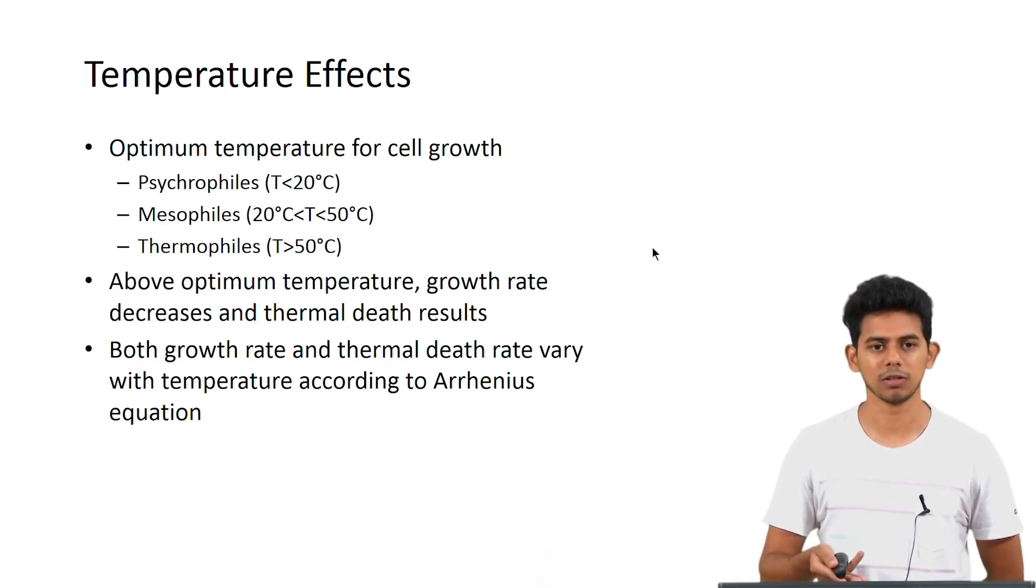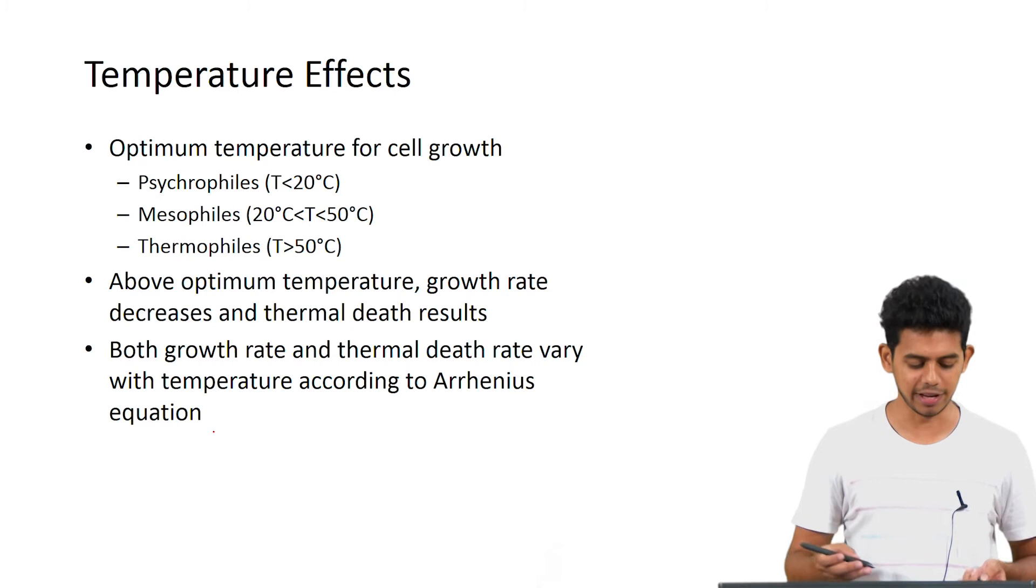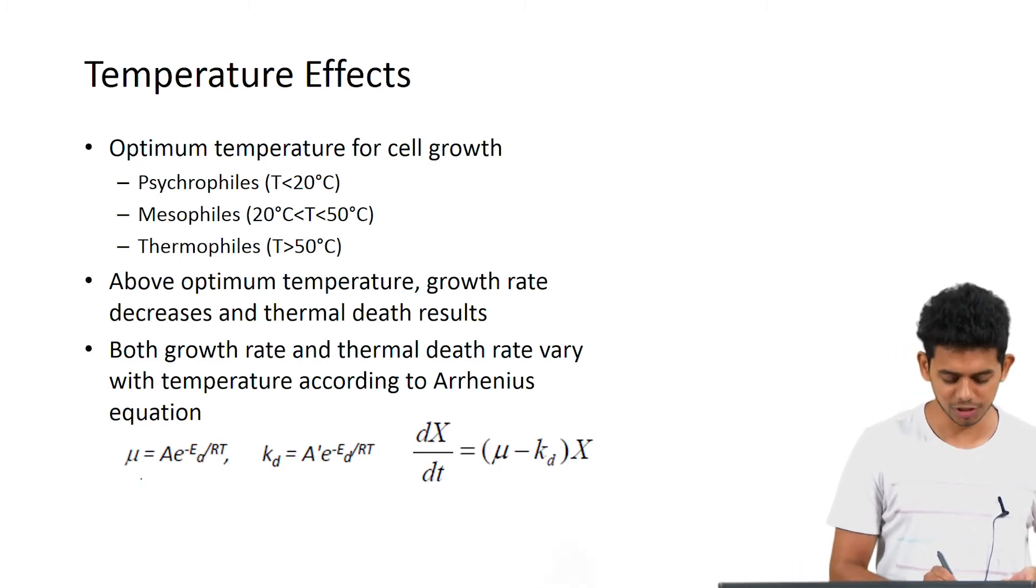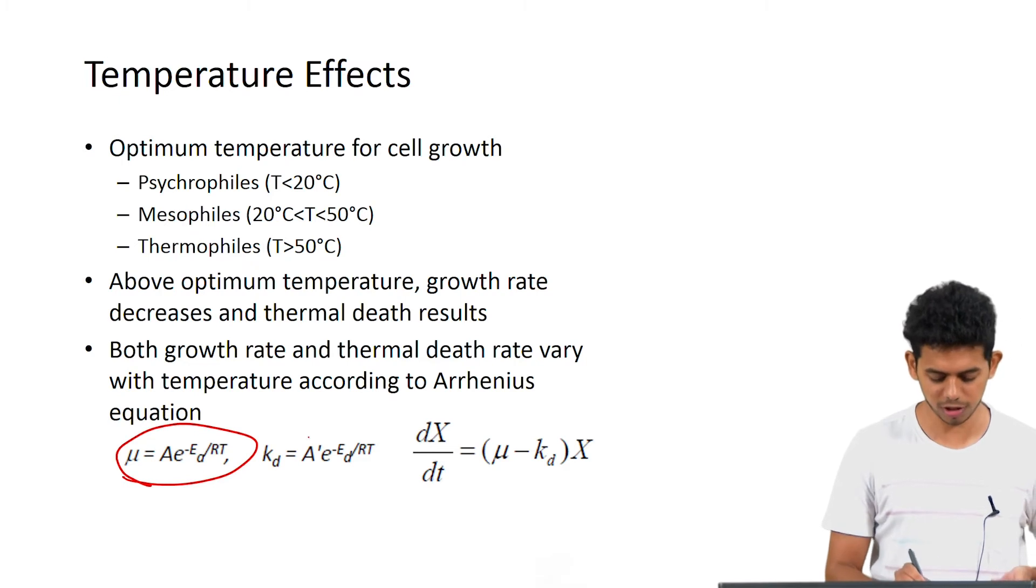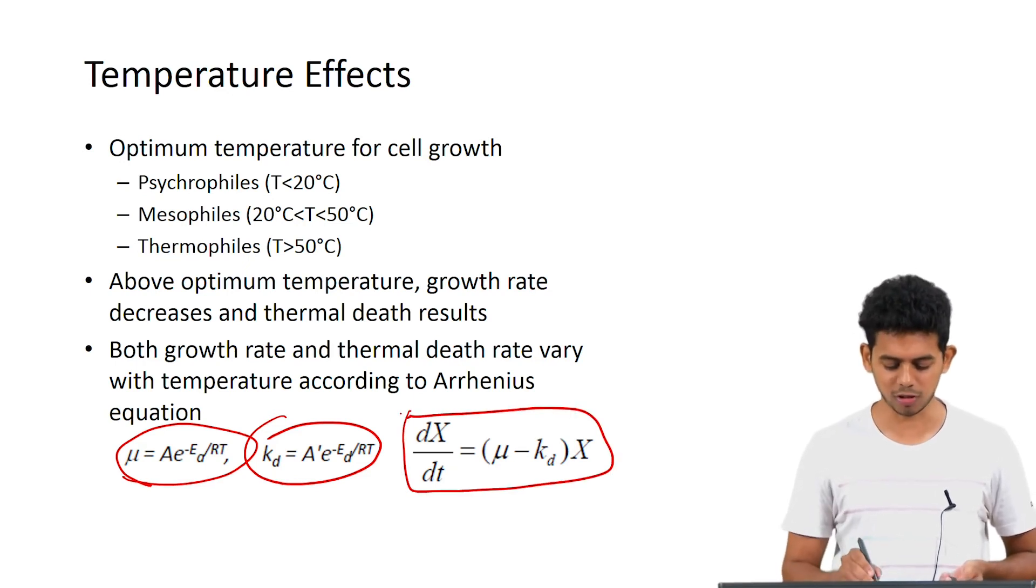Above this optimum temperature, growth rate decreases and thermal death results. The effect of temperature can be shown by the Arrhenius equation. This shows the growth rate constant and the death rate constant, and using these we can calculate the rate of cell concentration with respect to time.